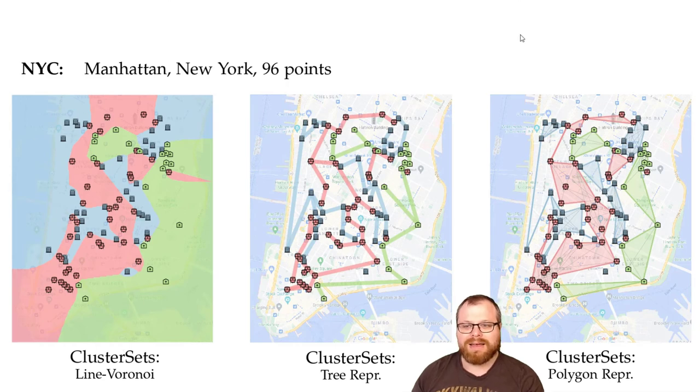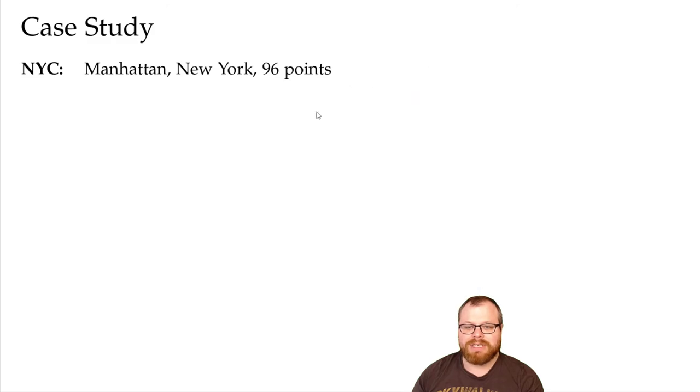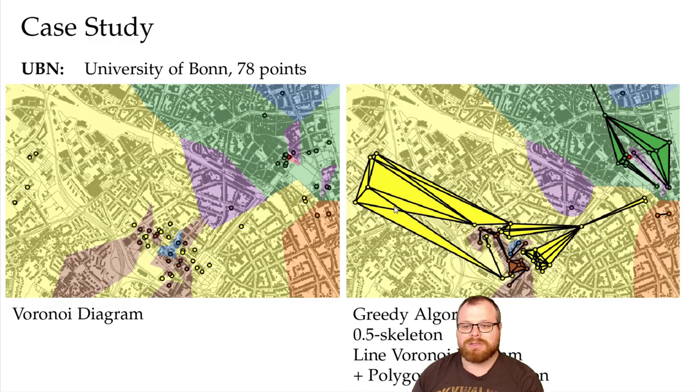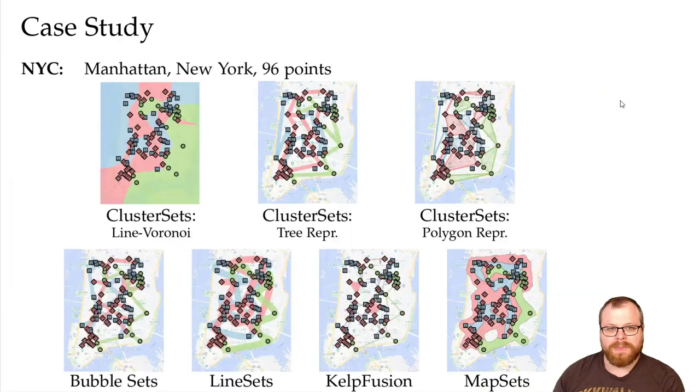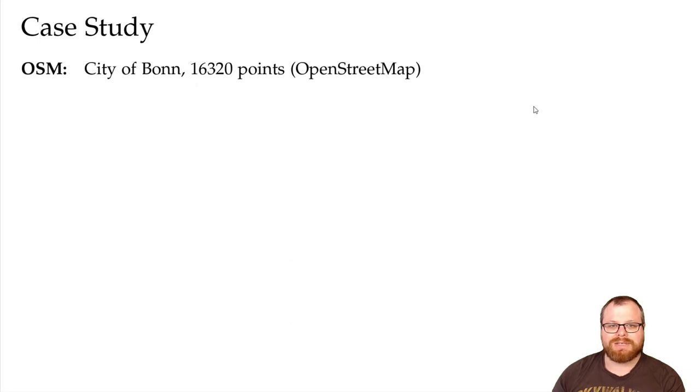The third dataset we extracted from OpenStreetMap and it has 16,320 points and 123 different categories. This is almost the same spatial extent as the first dataset from University of Bonn, but of course it has many more points of interest.